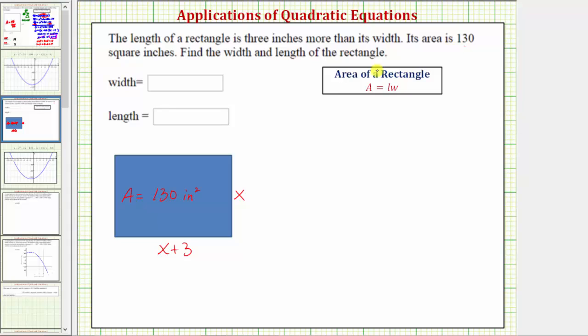So we'll substitute 130 for the area, and for the length times the width, we'd have the quantity x plus three times x, or if we want, we could write this as x times the quantity x plus three. Let's go ahead and change the order of this multiplication. So 130 equals x times the quantity x plus three.